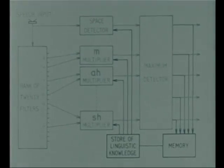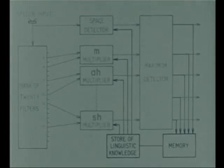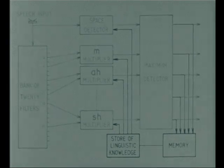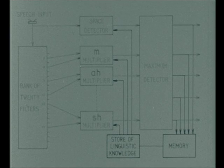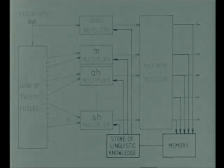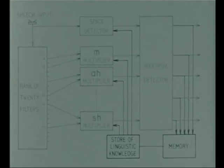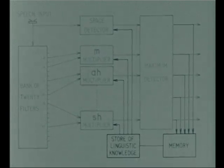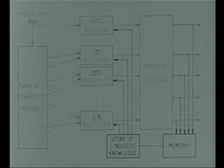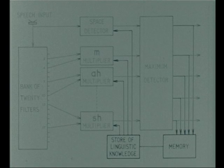This diagram shows the operation of the store of linguistic knowledge, which provides information about digram frequencies. Let us suppose that the machine has already recognized the vowel R and is now dealing with the next sound. The linguistic store produces a set of output voltages that are proportional to the probabilities of the different speech sounds following the vowel R. Each of these probability voltages is led to the appropriate acoustic recognizer and is there multiplied by the product of the two filter outputs.